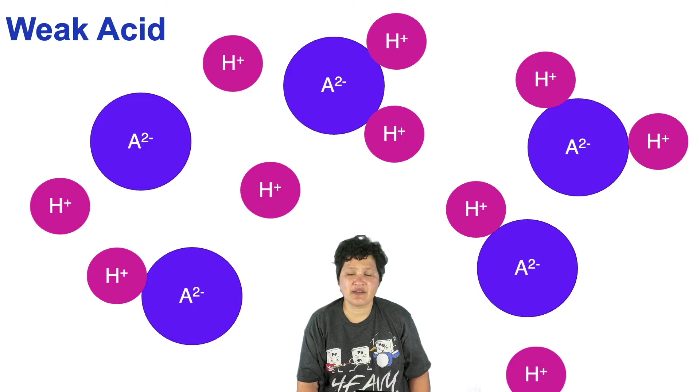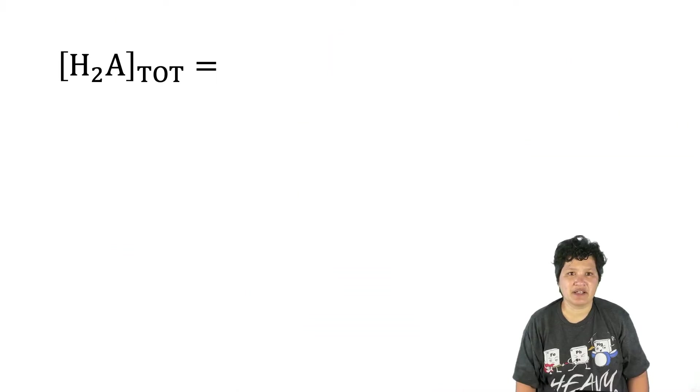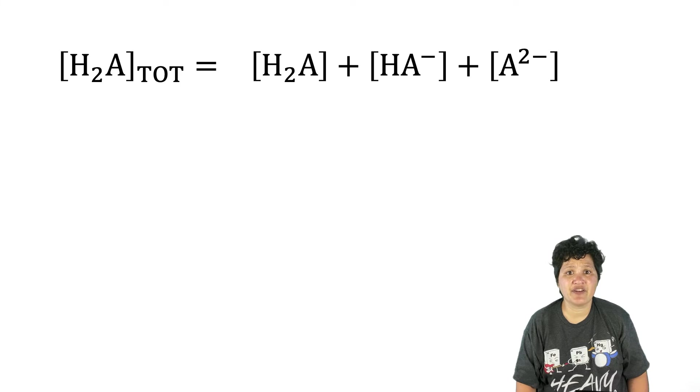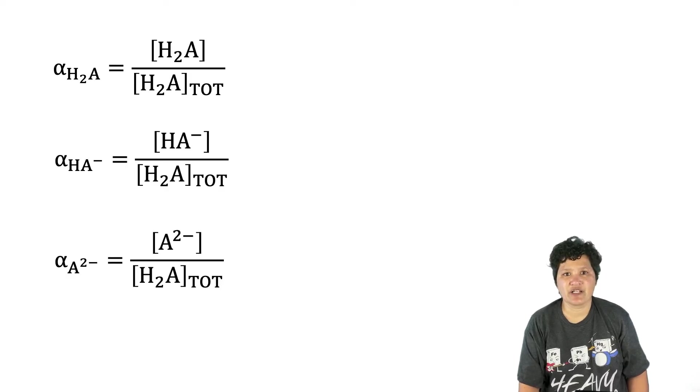A diprotic acid can be in the H2A form, the HA- form, or the A2- form. So the total amount of acid present in solution, which we write like this, will be the amount you have of each of those three species. Once again, a reminder that we're doing this accounting by molarity. Because a diprotic acid can form three possible species, we can calculate three different fractional compositions for H2A, HA- and A2-. The fractional composition for H2A, alpha sub H2A, will be the concentration of H2A divided by the total concentration of the acid. We can write similar expressions for the other two species.